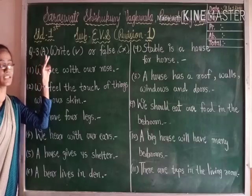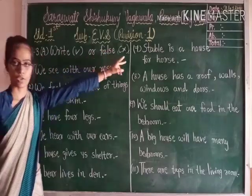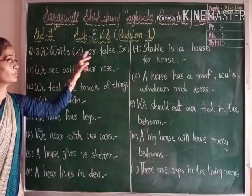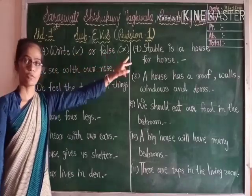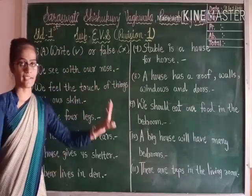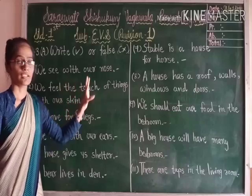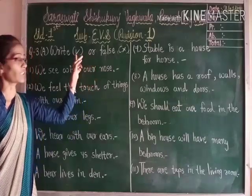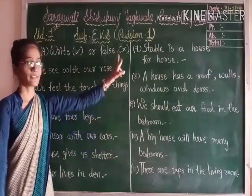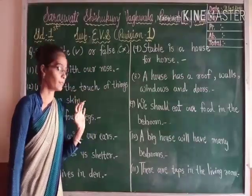Question 3A: true or false? So here the sentences are given. If the sentence is true, then we have to put a tick mark, and if the sentence is wrong, then we have to put a cross mark.